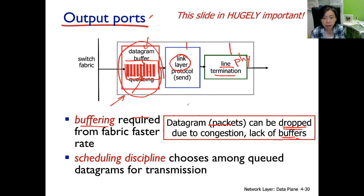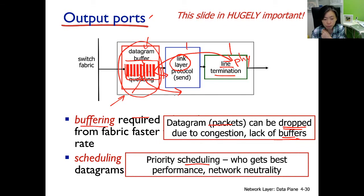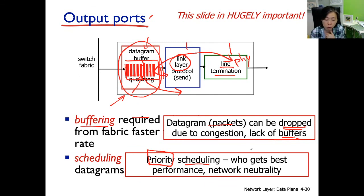The second issue is scheduling: when packets are drawn out of the queue onto the outgoing link, which one do we pick? One approach is simply first-in-first-out. Another is to pick packets that seem more important and pass them out first — a priority-based mechanism where packets are classified and some go out earlier than others. Alternatively, we might want to maintain fairness so that all packets receive equal treatment.